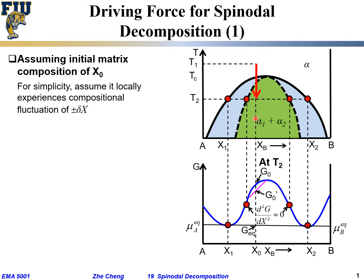Initially the system free energy would be at G0. For simplicity, assume the system locally experiences a compositional fluctuation: from the initial composition, some part becomes a little bit richer in B and some other part becomes a little bit leaner in B. The extent of this fluctuation is called delta x, where x is the molar fraction of solute B.